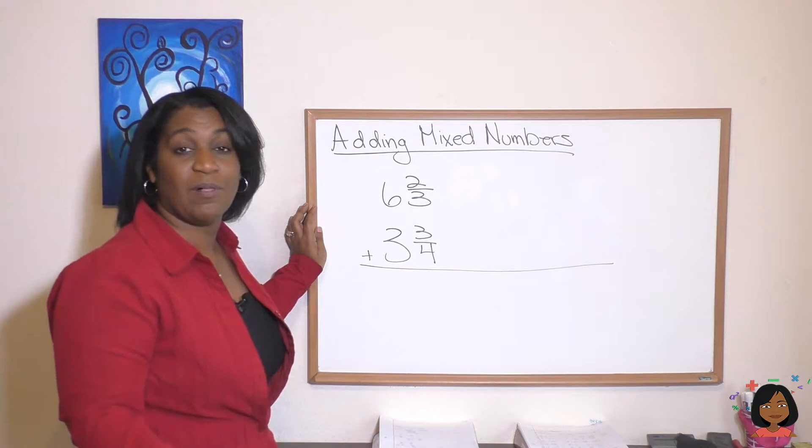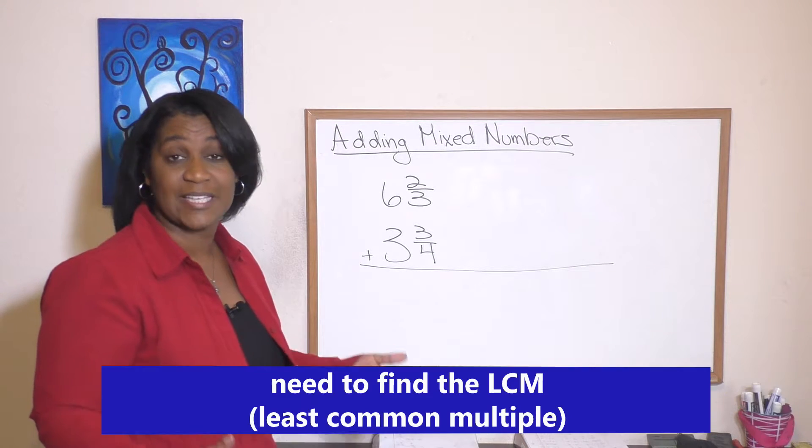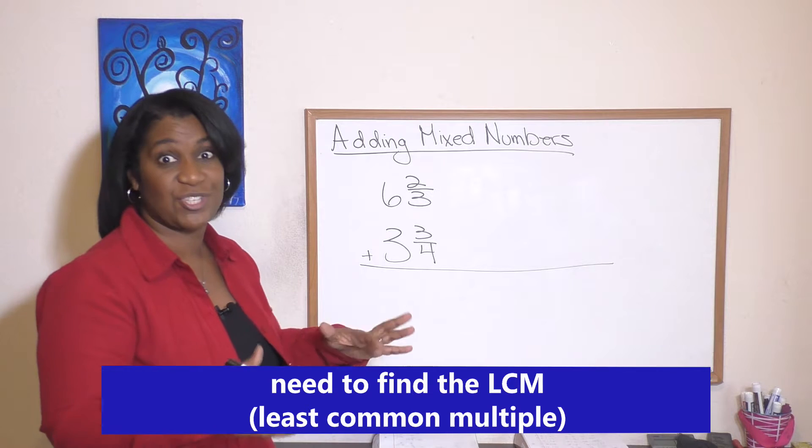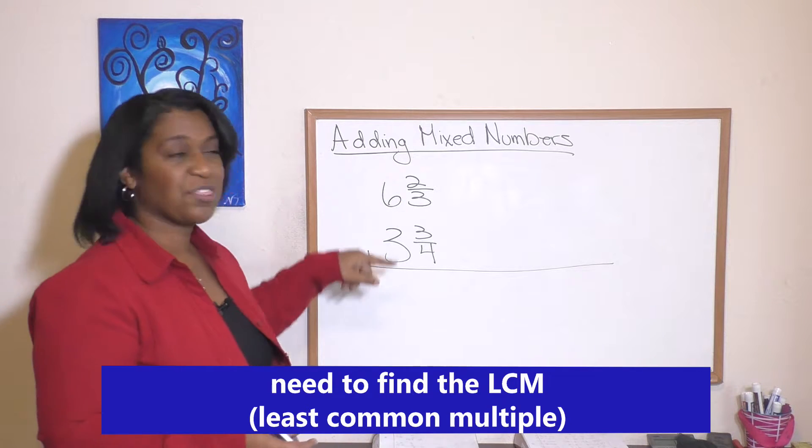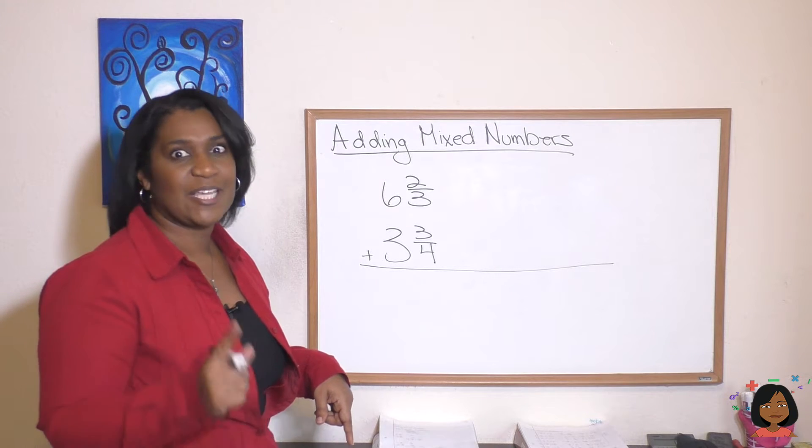This time we have an example where we have denominators that are not the same. So we've got to find the least common multiple to make sure we've shaped this. Well, we've got a three and a four. What's our least common multiple of three and four? It's 12.